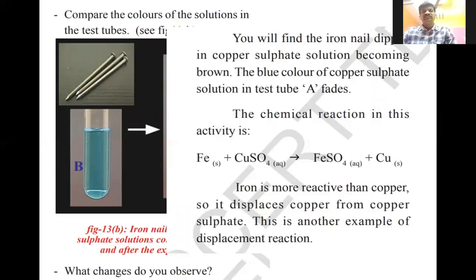You will find the iron nail dipped in copper sulfate solution becoming brown. The blue color of copper sulfate solution in test tube A fades. The chemical reaction: Fe + CuSO₄ → FeSO₄ + Cu. Ferrous replaces the sulfate from copper, forming ferrous sulfate, and copper remains. Due to this copper deposit, the nail changes to brown color. Iron is more reactive than copper, so it replaces copper from copper sulfate. This is another example of a displacement reaction.